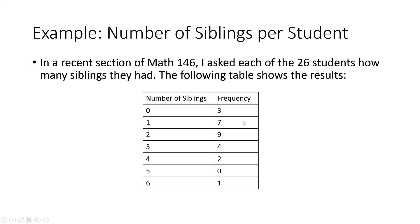So you can see here that 3 people had no siblings, 7 people had 1 sibling, 9 people had 2 siblings, 4 people had 3 siblings, 2 people had 4. Nobody had 5 actually in this class, but 1 person did have 6.